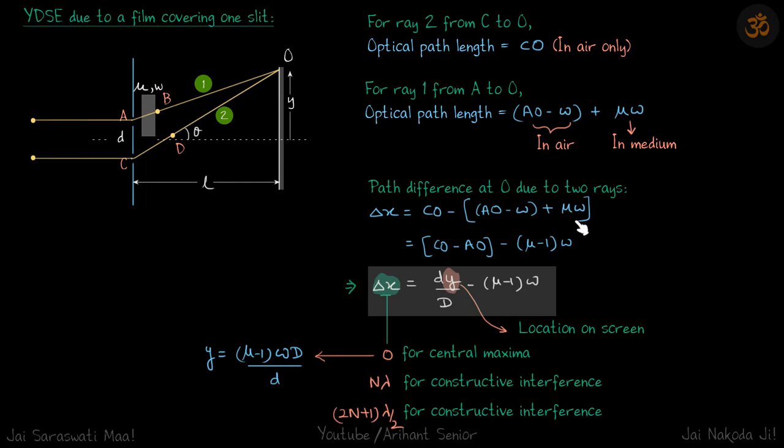So the optical path length in air for ray 1 is AO − w + μw. The path difference at point O is CO minus this quantity: CO − AO − w + μw, which simplifies to (CO − AO) + (μ − 1)w. Here, CO − AO is the geometrical path difference, which for a given height y on the screen equals dy/D. So the total path difference is Δx = dy/D + (μ − 1)w.